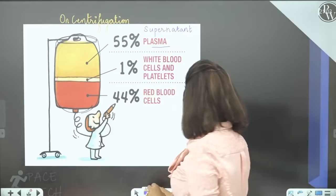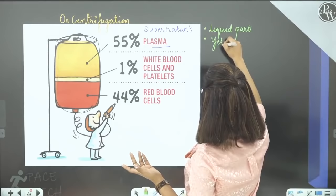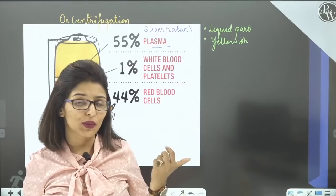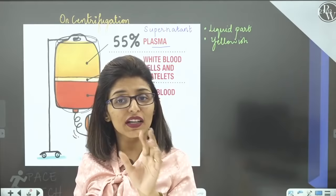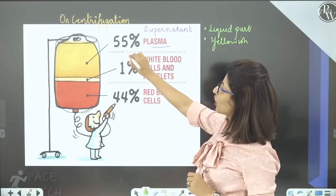Sabse upar wali layer supernatant kehlaati hai — woh hai plasma, the liquid part of blood. Plasma slight yellowish/pale yellowish hota hai. Total blood ka 55–60% plasma hota hai.